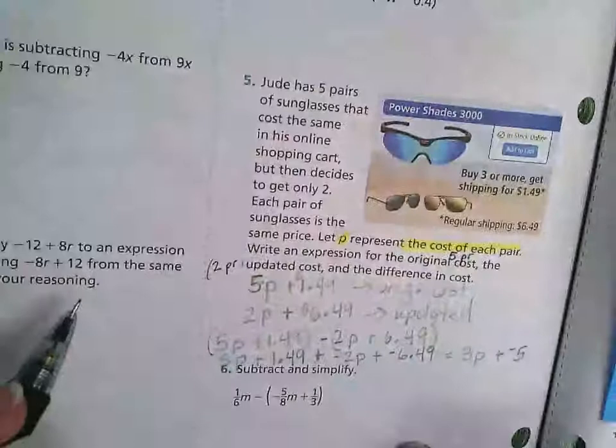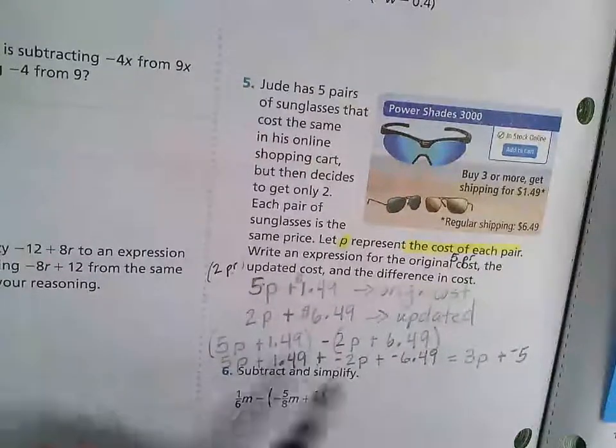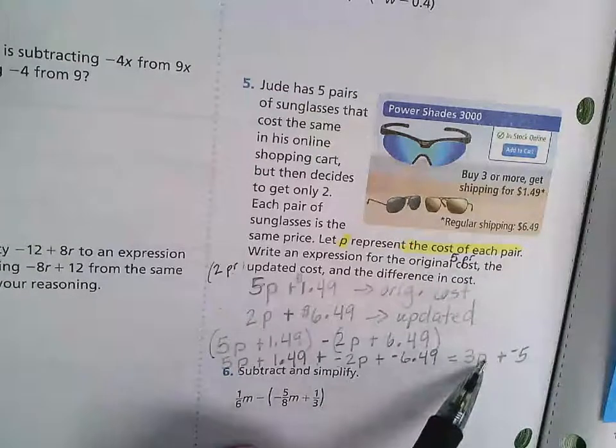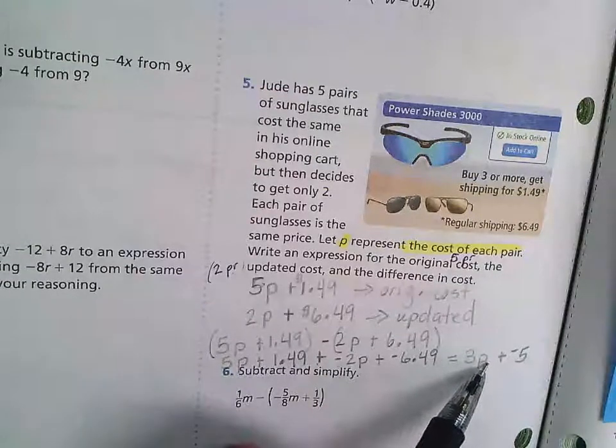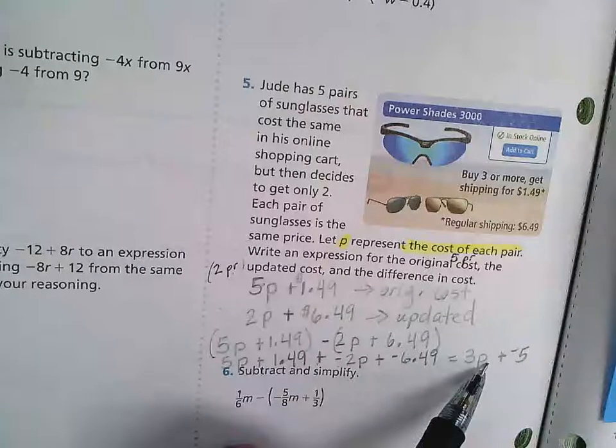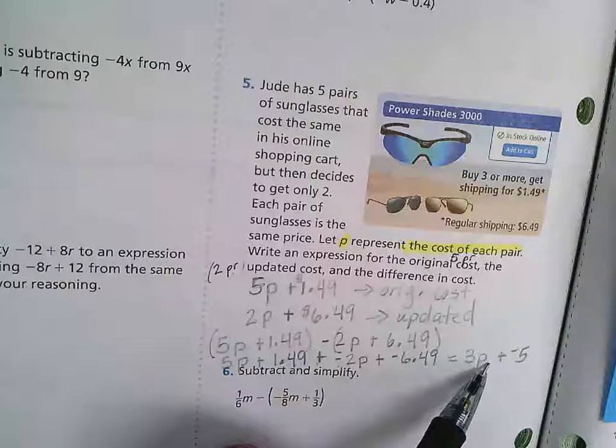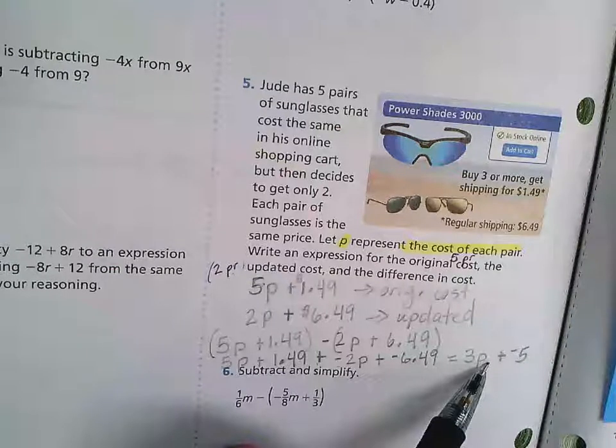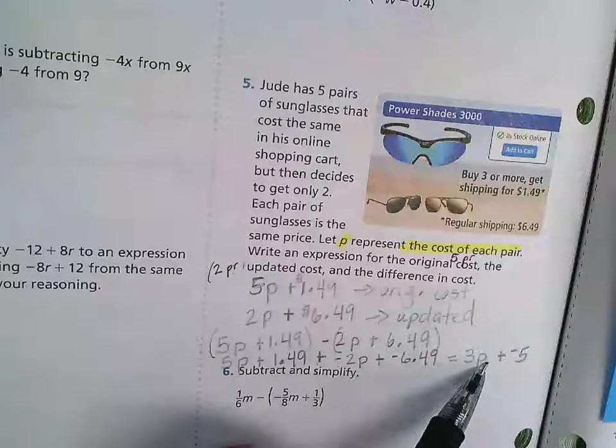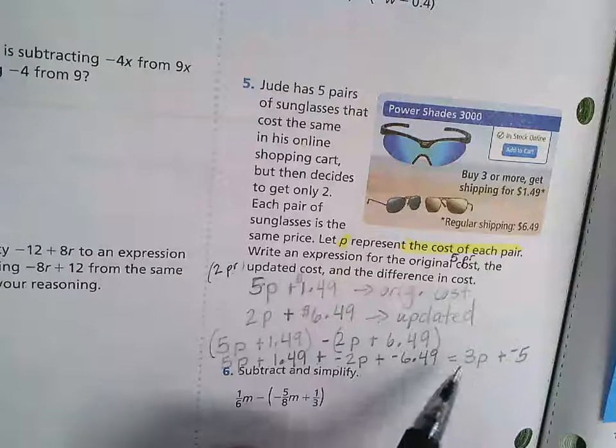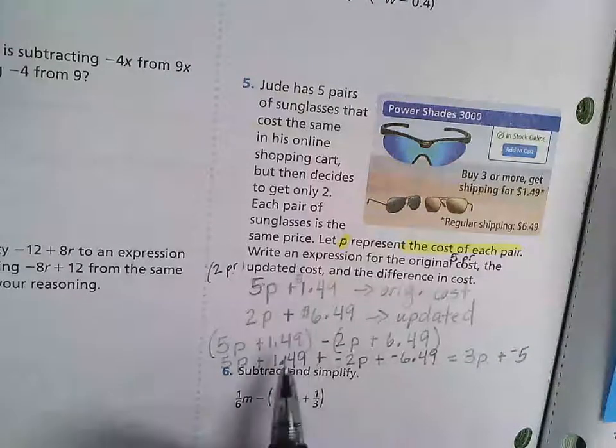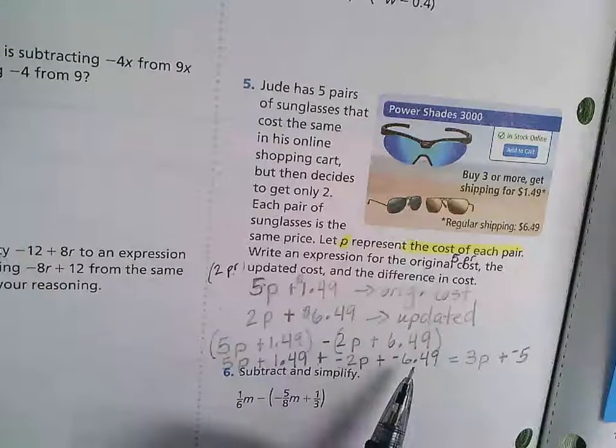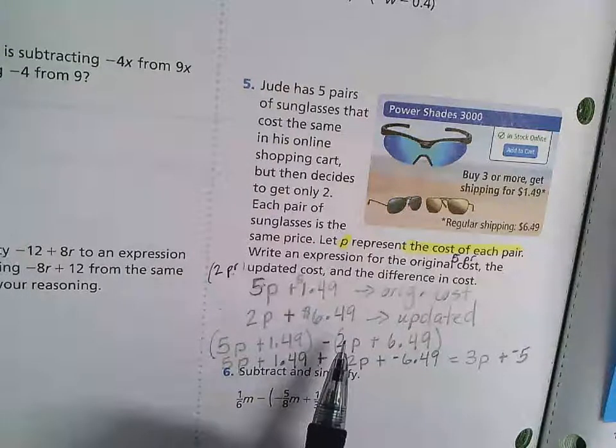So what that means, what that is telling me, it's not telling me that the shipping company is going to be sending me $5.00. What it means is that I'm going to end up paying $5.00 more, which is kind of obvious here in shipping, if I switch to the two pairs of glasses.